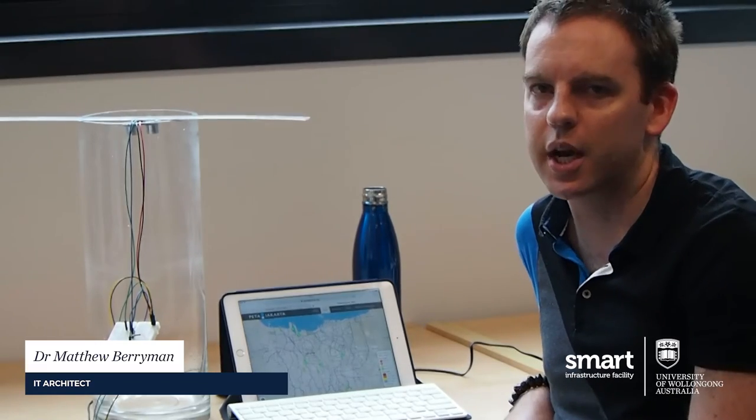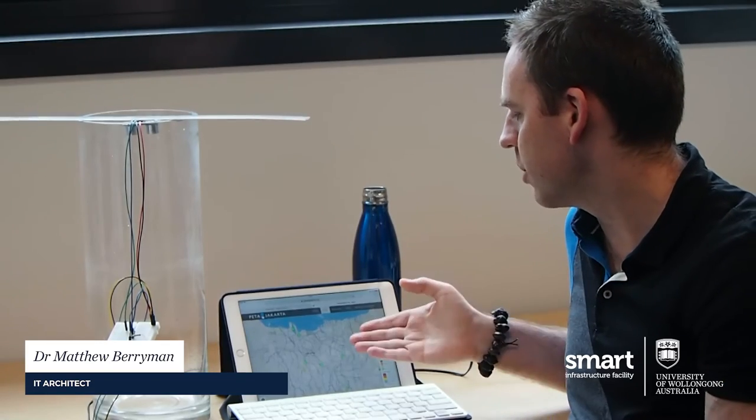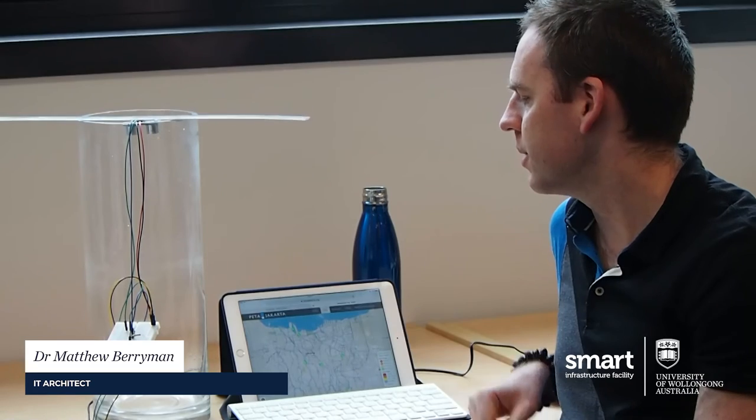And down the track, the intent is to put that as another source of data in the Peta Jakarta map, where we've got some of the human reported flood data. And we're going to put in some of this automatic flood sensor reported data as well into this map. So citizens can get a better picture of the flooding that's going on in Jakarta.